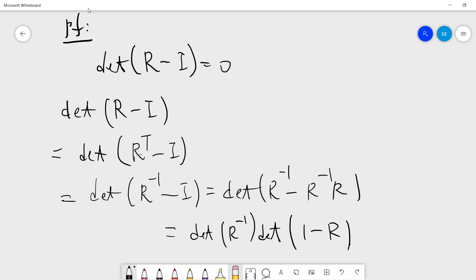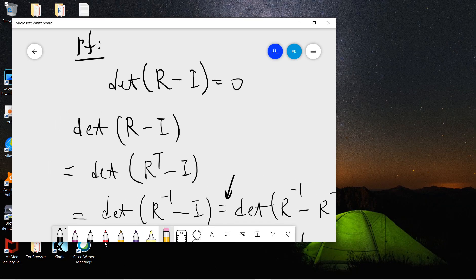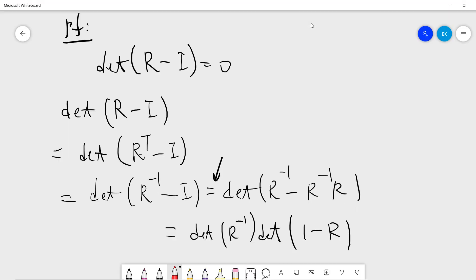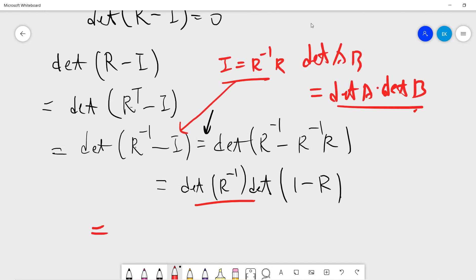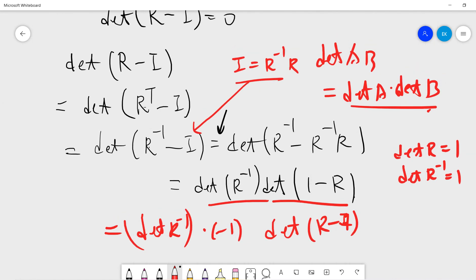Let me write down the key step. What we use is this identity: determinant of A times B equals determinant of A times determinant of B. So this is determinant of R inverse, which is minus one because this is a three by three matrix. This is the determinant of R minus one. Since the determinant of R is one, the determinant of R inverse is also one. So this is just minus one times the determinant, so this is the determinant of R minus one.